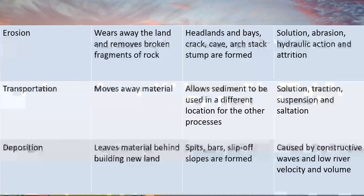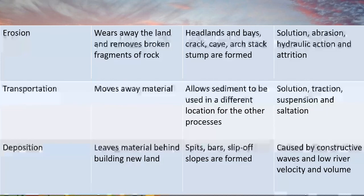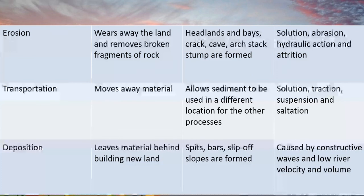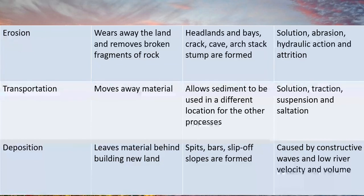Right, the answers are now on screen. Erosion: it wears away the land and removes broken fragments of rock. Headlands and bays, crack, cave, arch, stack, and stump are formed. The processes are solution, abrasion, hydraulic action, and attrition. Transportation simply moves material and allows sediment to be used in a different location. The processes within transportation are solution, traction, suspension, and saltation. The remaining one we haven't fully discussed is deposition — the leaving of material behind. Spits, bars, and slip-off slopes are all formed through this, caused by constructive waves or low river velocity and volume, but we're focusing on the coastal side, so constructive waves in this case.